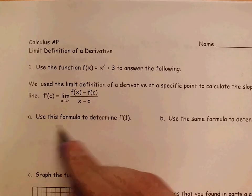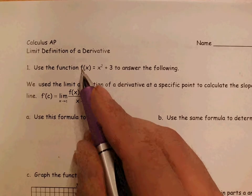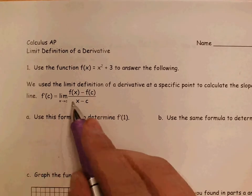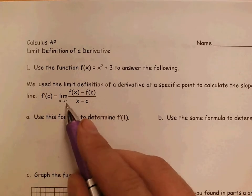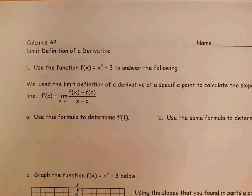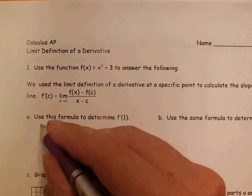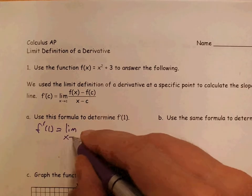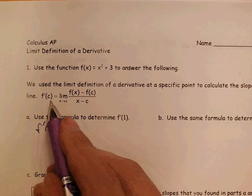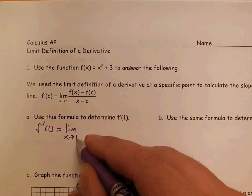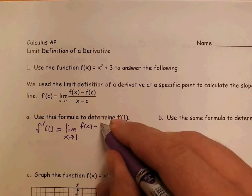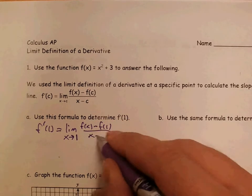This asks us to find, part A asks us to find f prime of 1, given that f of x is x squared plus 3. We're using this limit definition of the derivative that says f prime at various values is equal to the limit as x approaches that value of this formula here. So, first, f prime of 1 is equal to the limit as x approaches, so c is the number we plugged in here. As x approaches 1 of f of x minus f of 1, because 1 is c, over x minus 1.